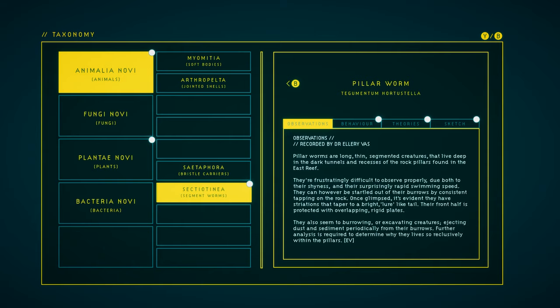Observations. Pillar worms are long, thin, segmented creatures that live deep in the dark tunnels and recesses of the rock pillars found in the East Reef. They're frustratingly difficult to observe properly, due both to their shyness and their surprisingly rapid swimming speed. They can, however, be startled out of their burrows by consistent tapping on the rock. Once glimpsed, it's evident they have striations that taper to a bright, lure-like tail. Their front half is protected with overlapping, rigid plates. They also seem to be burrowing or excavating creatures, ejecting dust and sediment periodically from their burrows. Further analysis is required to determine why they live so reclusively within the pillars.